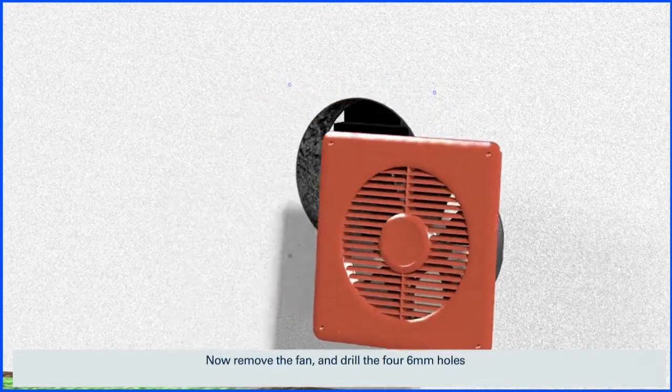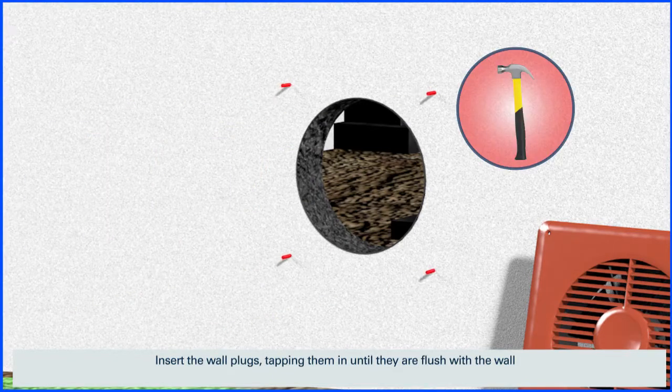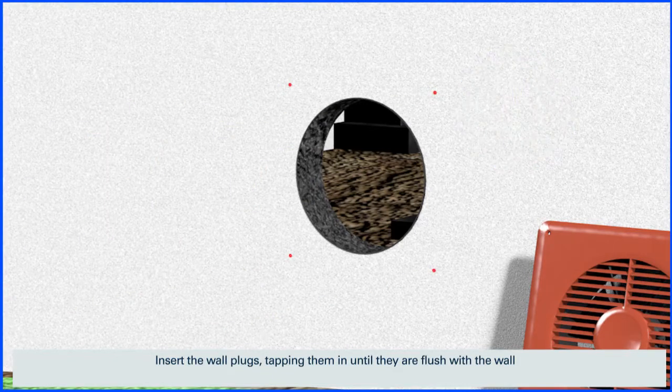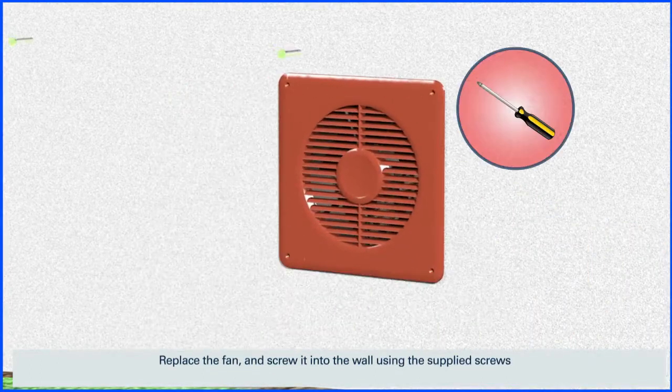Now remove the fan and drill the four six millimeter holes. Insert the wall plugs, tapping them in until they are flush with the wall. Replace the fan and screw it into the wall using the supplied screws.